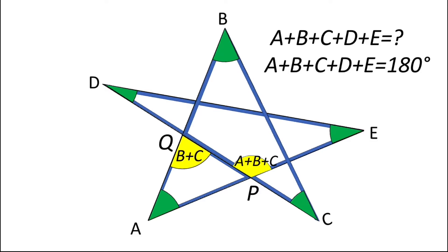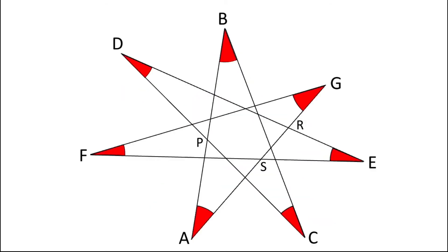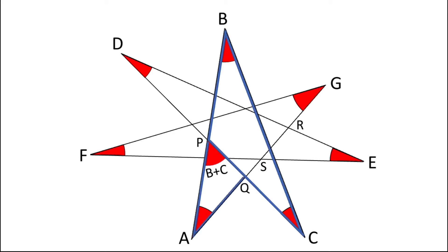In the same way, we will proceed to find the sum of all angles of a 7-pointed star. So let us draw the problem. Let us consider the triangle P, B, C first of all — from here, angle b plus angle c will give you the exterior angle, that is angle b plus c. Now consider the triangle A, P, Q. In this triangle A, P, Q, if I use the exterior angle property, then I will get angle PQR as a plus b plus c.